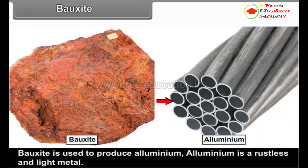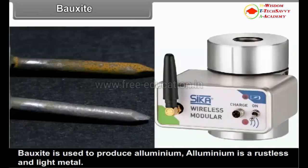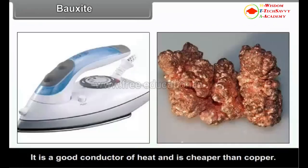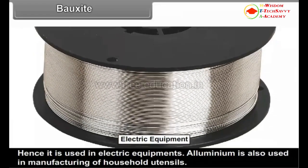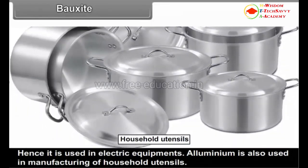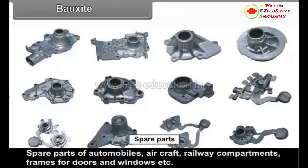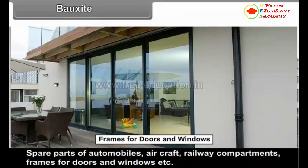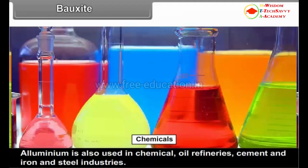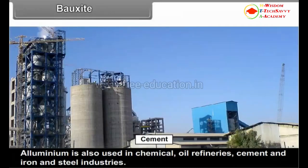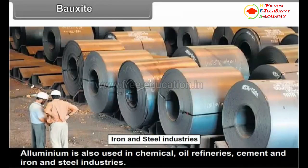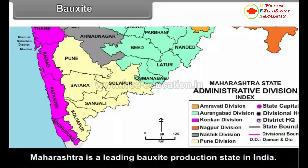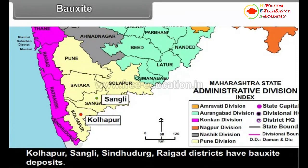Bauxite. Bauxite is used to produce aluminium. Aluminium is a rustless and light metal, a good conductor of heat and cheaper than copper, hence used in electric equipment. Aluminium is also used in manufacturing household utensils, spare parts of automobiles, aircraft, railway compartments, frames for doors and windows, chemical industries, oil refineries, cement and iron and steel industries. Maharashtra is the leading bauxite-producing state in India. Kolhapur, Sangli, Sindhudurg and Raigarh districts have bauxite deposits.